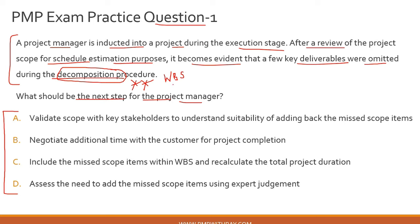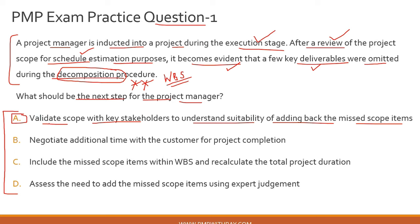Let's summarize what's happening: you are a project manager inducted into the project during the execution stage. You did a review of the scope because you were trying to estimate the schedule. The project is already in the execution stage, but you are doing an assessment to understand whether you are on track or off track with respect to the baseline schedule. However, when you were doing that process, it becomes evident that a few key deliverables were omitted during the WBS creation phase. What should you do as a project manager?